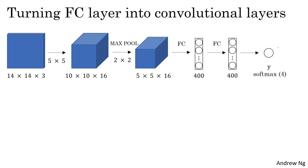In order to make the change we'll need to in a second, I'm going to change this picture a little bit and instead view Y as four numbers corresponding to the class probabilities of the four classes that the softmax unit is classifying amongst. The four classes could be pedestrian, car, motorcycle, and background, or something else.